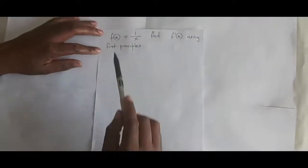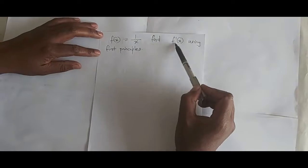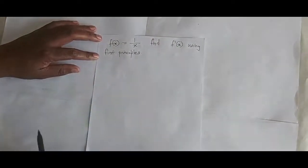We are given f of x equals 1 over x, and we must find f dash of x using the first principles.